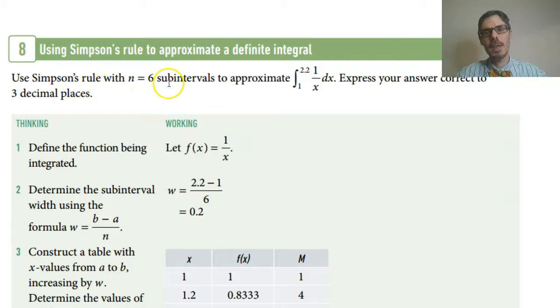Use Simpson's rule with n equals six sub-intervals—notice it's an even number—to approximate this integral. Express your answer to three decimal places. So we'll work intermediate to four. My function is f(x) = 1/x. The width of each section is the whole width, 2.2 minus 1, divided into six sub-intervals. So that's my width.